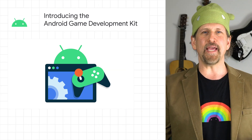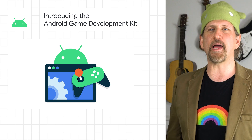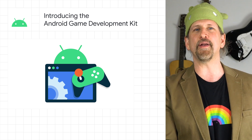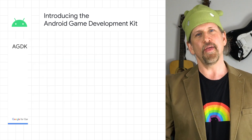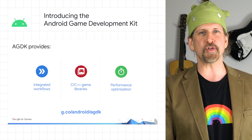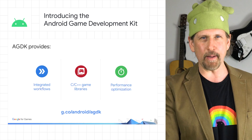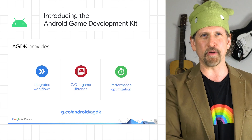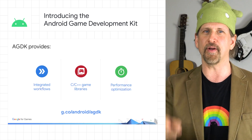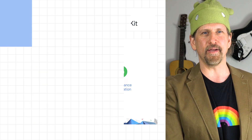We announced the Android Game Development Kit with a full range of tools and libraries to help you develop, optimize, and deliver high-quality Android games. This includes an extension to allow you to easily add an Android target to your Visual Studio game project, new C and C++ game development libraries, and a full-featured frame profiler within the Android GPU Inspector. Head on over to the blog for more on the AGDK.